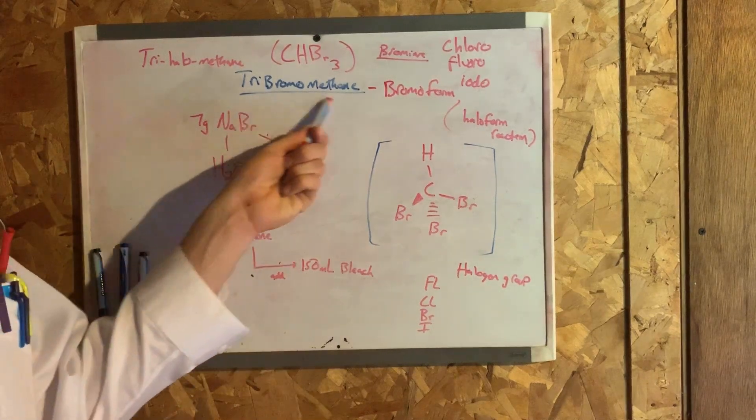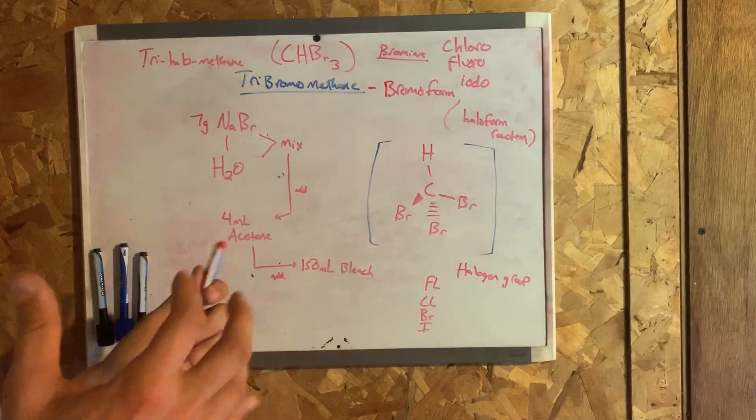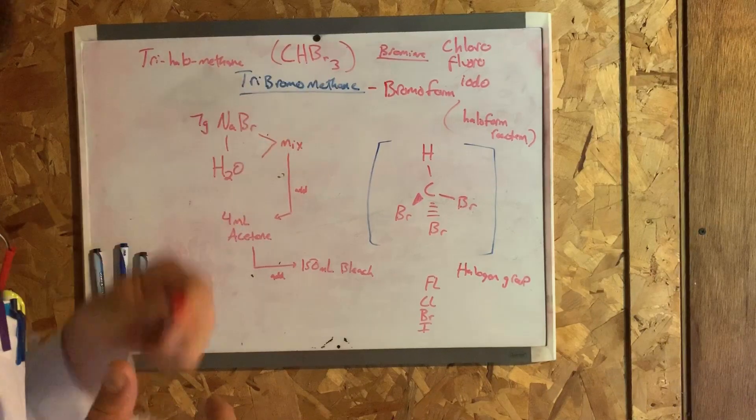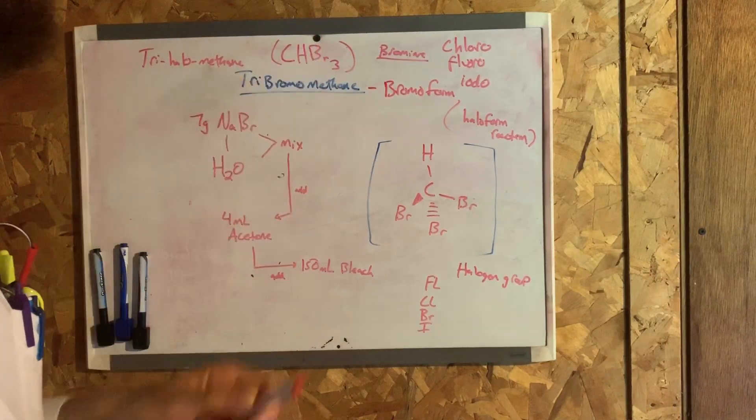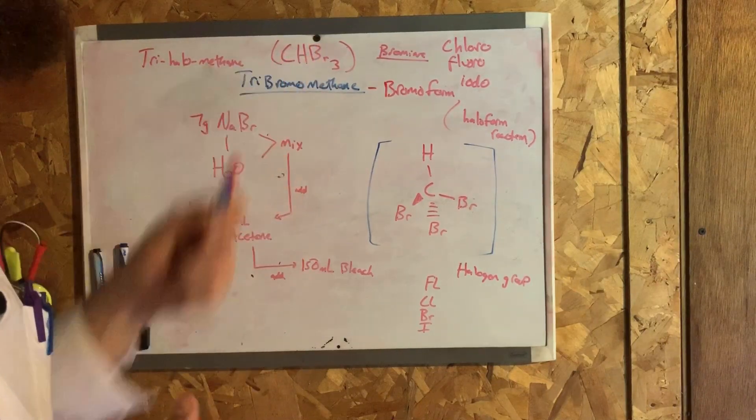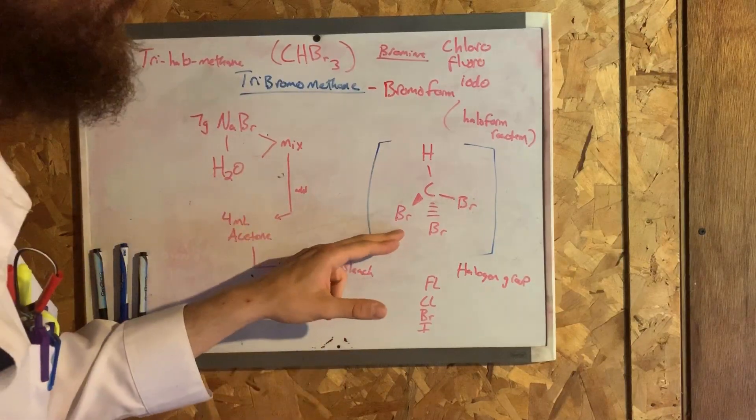Working with something called tribromomethane in the laboratory is a formula that's written out as CHBr3. That's three bromine atoms, one hydrogen atom and one carbon atom. As a molecule it appears to look like this.